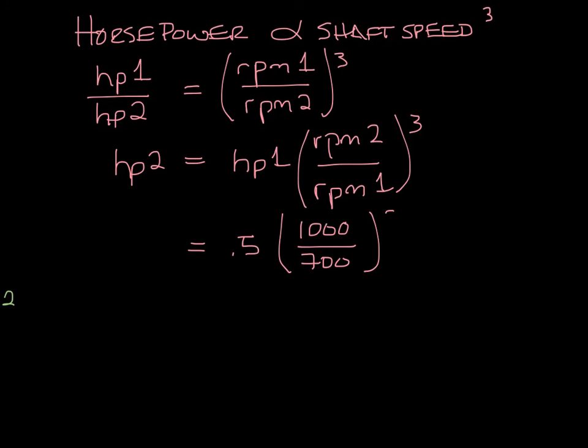We'll use 1,700 again. That comes out to 1.46 or approximately 1.5 horsepower. So increasing your RPM from 700 to 1,000 increased your horsepower from 0.5 to 1.5.